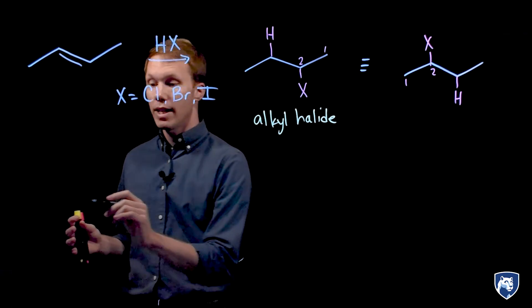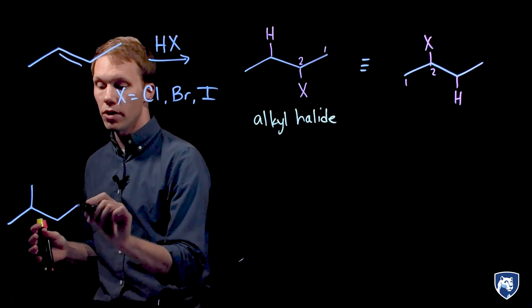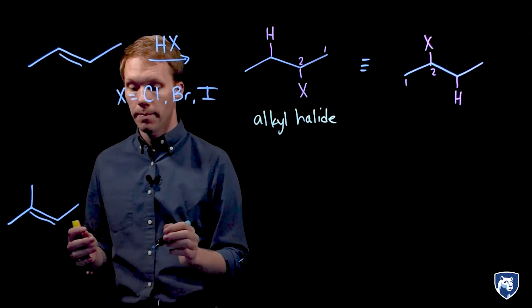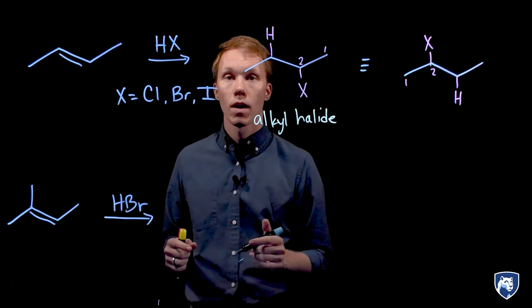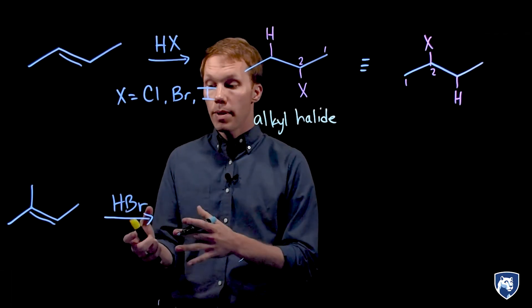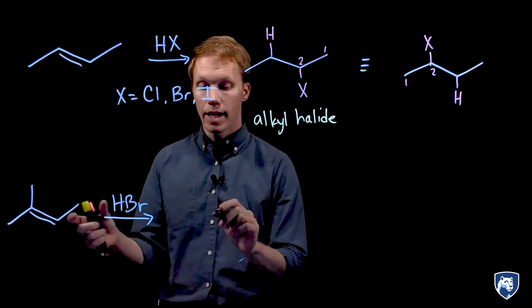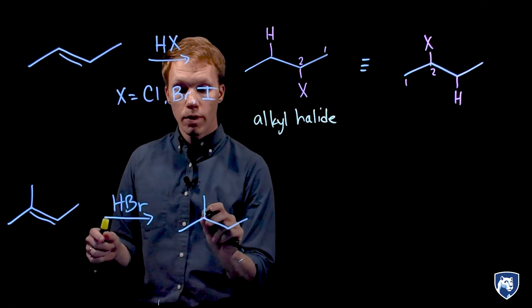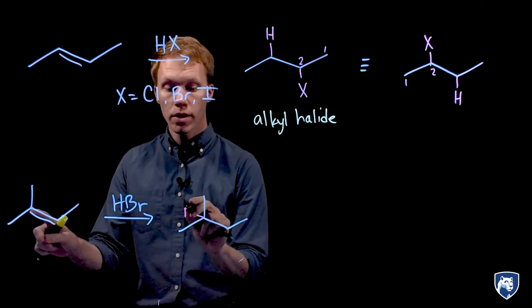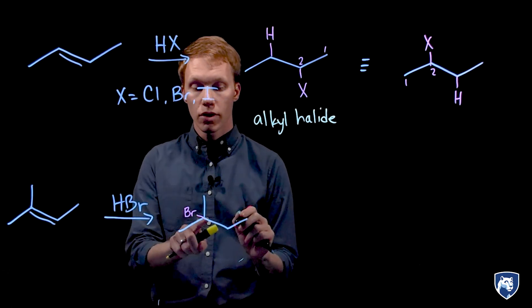Now let's look at an alkene that is not equally substituted at both ends of the double bond. We'll use HBr as an example here. So I'm going to add H and Br to the two carbons of the alkene. I can do this two ways. One way would be to add the halogen to the more substituted side. Here it is a tertiary center. I have one, two, three alkyl groups.